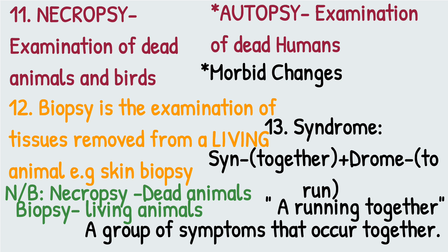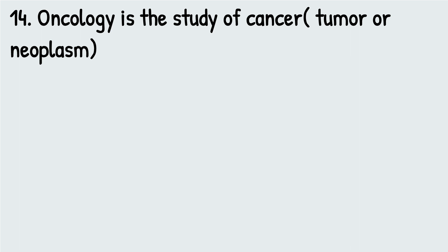Number thirteen is syndrome. Syndrome simply means 'a running together.' It refers to a group of symptoms that occur together and characterize a certain disease. When we talk about symptoms, we said they are clinical signs — for example, swelling, lameness, diarrhea — shown by an animal as a result of changes in the tissue. When a group of symptoms occur together and characterize a certain disease, they are called a syndrome.